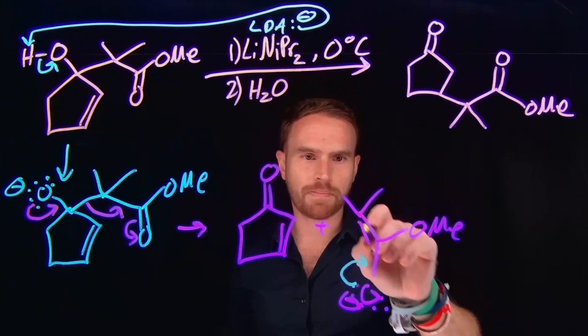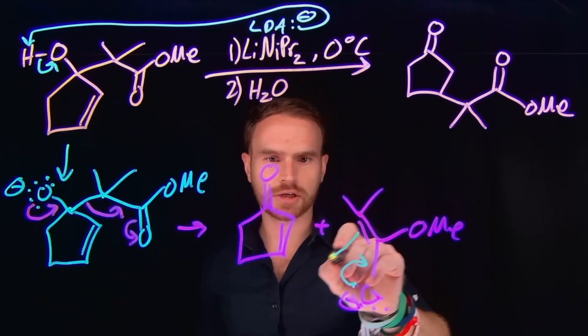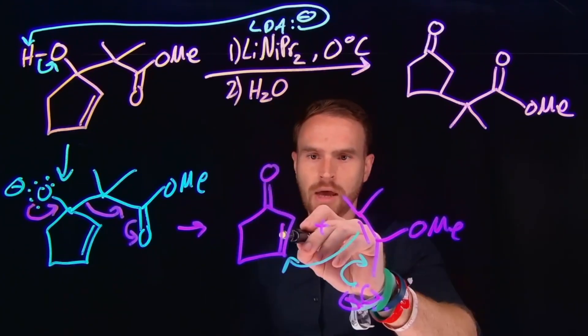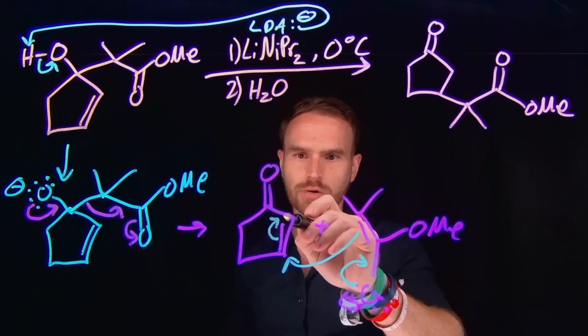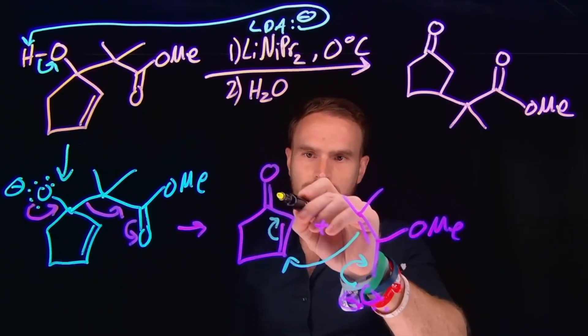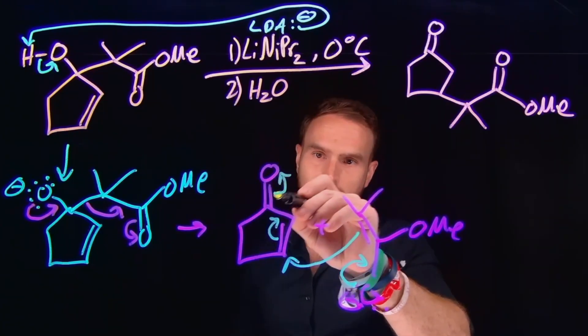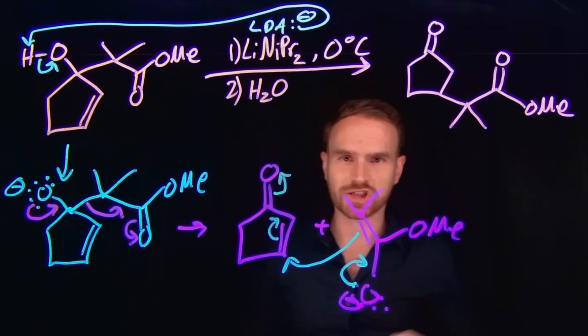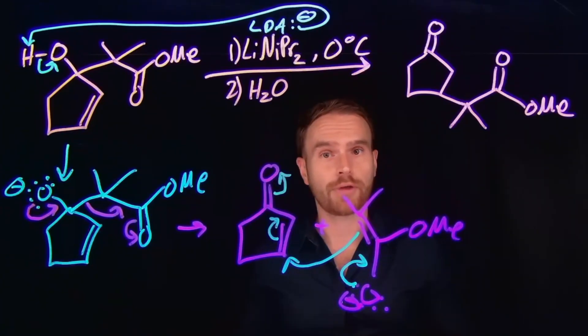allowing us to use the pi electrons at the alpha carbon position to attack this four position, which will also kick over these electrons to make a new carbon to carbon double bond and also serve to kick over these pi electrons to make our oxygen negatively charged and reform another enolate species.